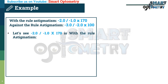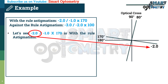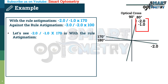Let's distribute this power into the optical cross. This is the optical cross. 170 degrees will be somewhere here and 80 degrees will be somewhere here. The minus 2 is the spherical power, so it will be in both meridians — in 170 degrees and in 80 degrees. The minus 1 cylinder is at the 170 degree axis, so the cylinder power will be 90 degrees apart, here in the 80 degree meridian. In the 80 degree meridian, we have a total of minus 2 plus minus 1, or minus 3 diopters.